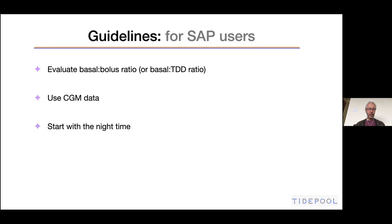Start with the nighttime. When I see somebody's data, I first look at midnight to 6 a.m. That is the chunk that is pure and clean — no food, no snacking, no exercise, no stress, patient is sleeping. Looking at that clean data gives a good idea of just basal rate function. Then start manipulating and fine-tuning the basal rates to get a good nighttime CGM tracing without dealing with carbs, snacks, insulin-to-carb ratio, and ISF. The nighttime is important, and remember the patterns.